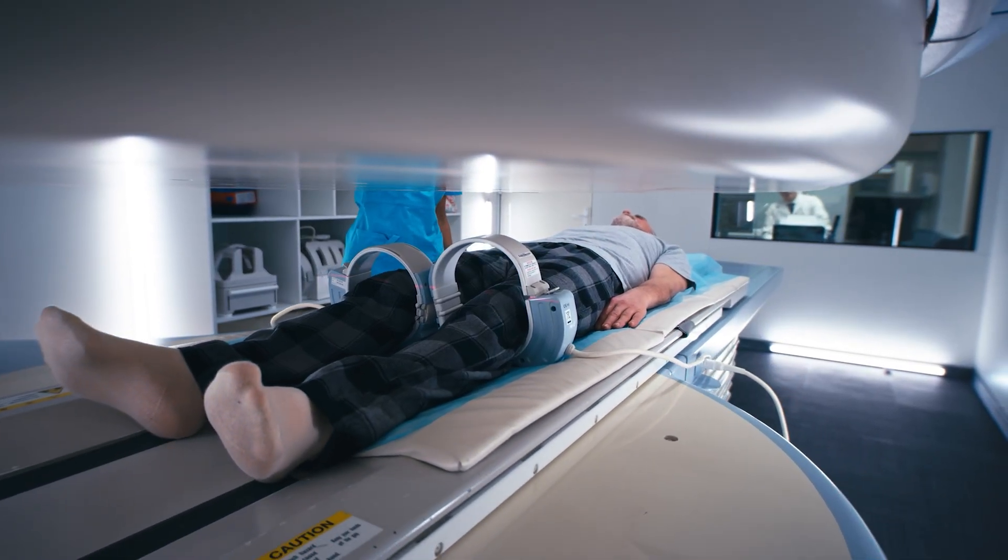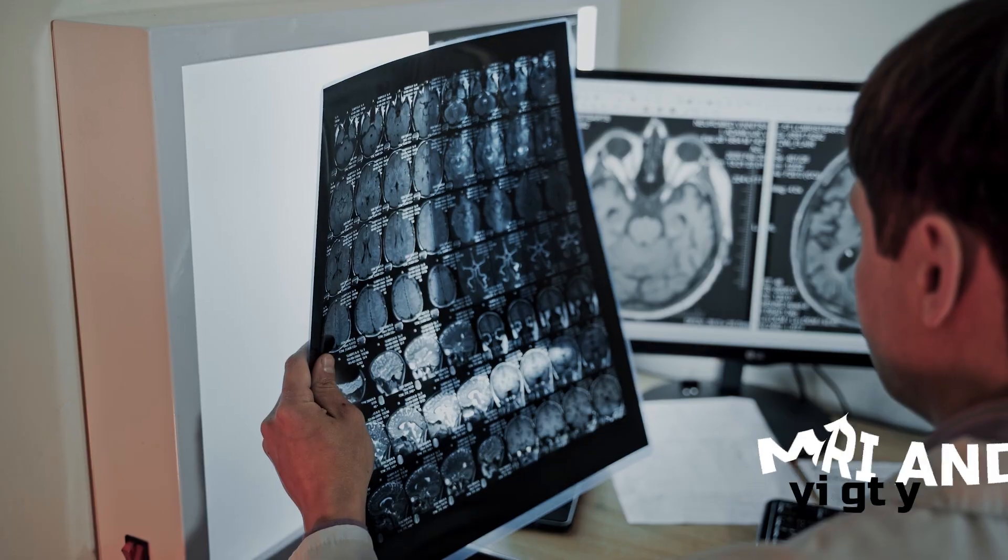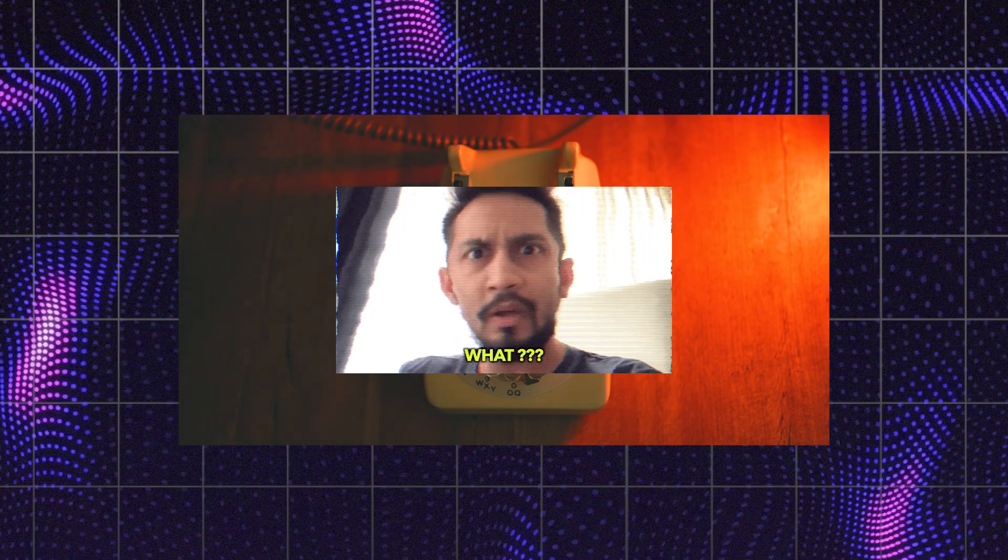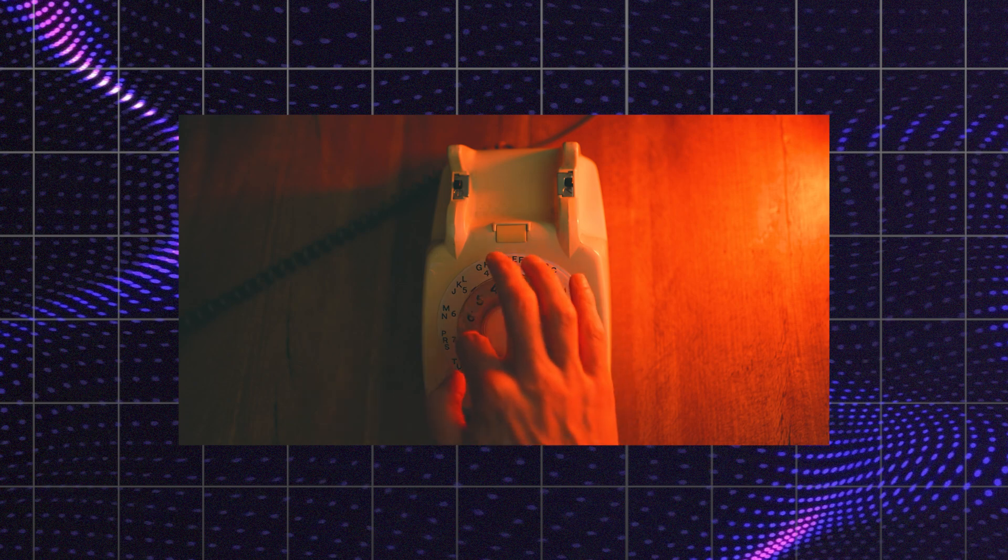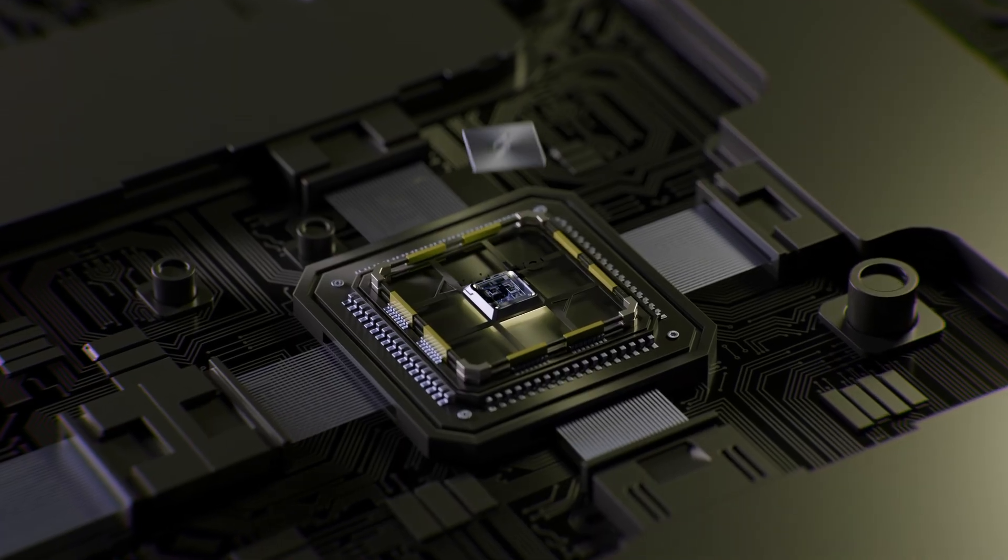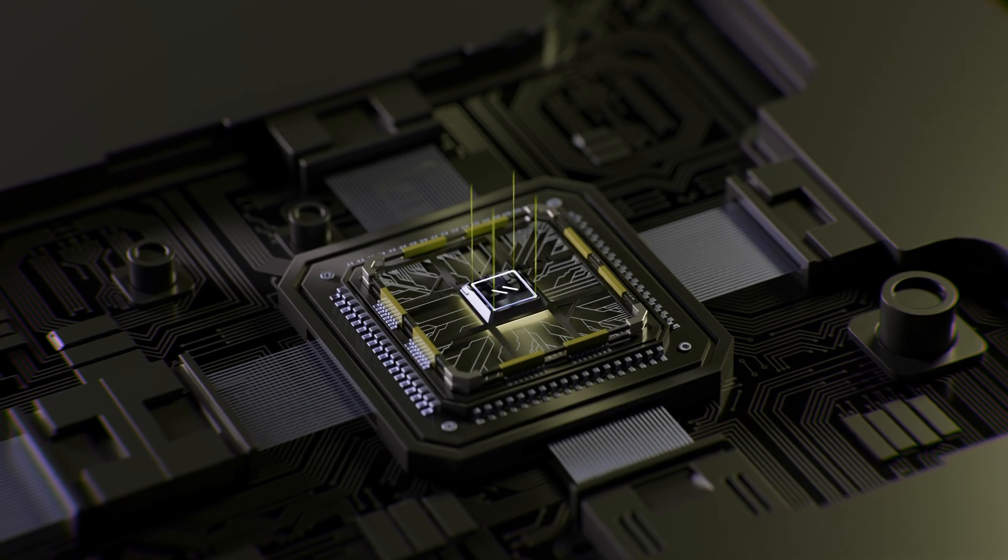Traditional brain mapping techniques like MRI and CT scans have been the workhorses of neuroscience for decades. But let's face it, they're about as cutting edge as a rotary phone in the age of smartphones. AI is transforming these old school tools into the neurological equivalent of a quantum computer.